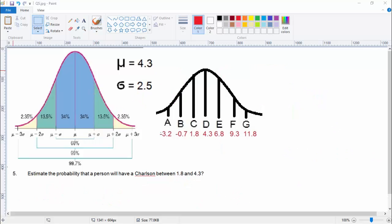Okay, so finally, we get to the last question, which is question five, which is kind of a freebie, right? So what is the probability that a person will have a Charlson between, it's saying probability, but it means percent, between 1.8, where's that, and 4.3. And you know what that is, that's just this little piece here, 34%, you're a pro.